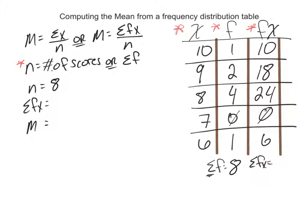And then sum of f of x is just adding up all your f of x's, so you have 10 plus 18 plus 24 plus 0 plus 6, and we get 66.